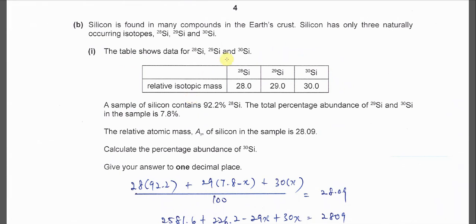This is the isotopes, silicon isotopes calculation. Given the relative isotopic mass of silicon 28, 29, 30, and 92.2 percent of the silicon 28, and the total percentage of the silicon 29 and silicon 30 is 7.8.